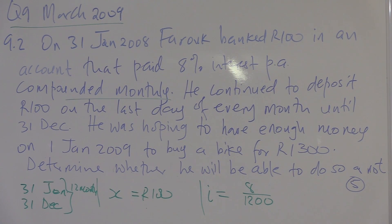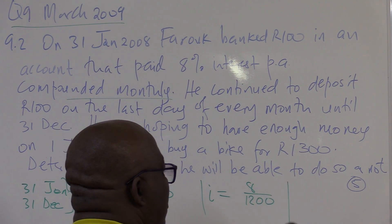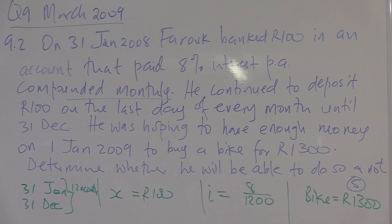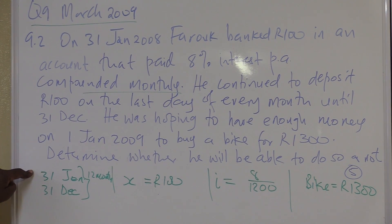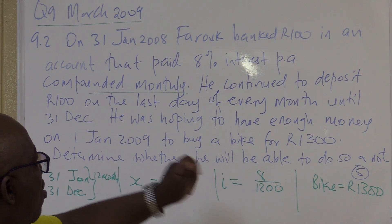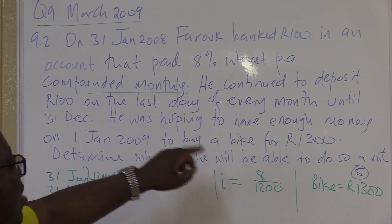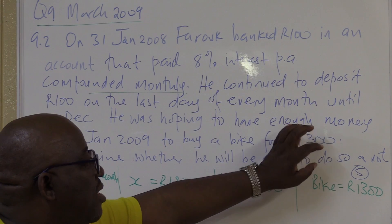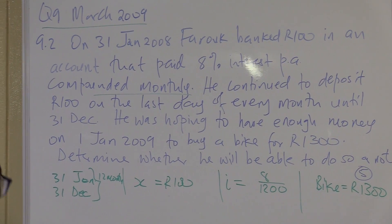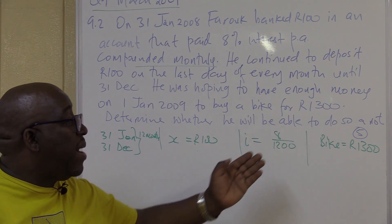He was hoping to have enough money on 31 January 2009 to buy a bike worth 1,300 rand. Determine whether he will be able to do so or not. Let's understand this once more: on 31 January 2008, Farouk banked 100 rand into an account paying 8% compounded monthly. He continued to deposit the same 100 rand — so it is X — on the last day of every month until 31 December, so he did this for 12 months. He was hoping to have enough money to buy a bike. This is the ultimate goal — we want to check whether he will have that amount or not.